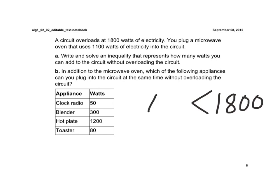And we already put 1,100 on, so now we have X plus 1,100 is less than 1,800.